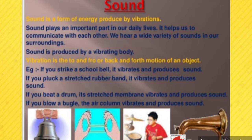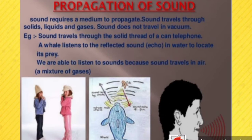Sound requires a medium to propagate. Sound travels through solids, liquids, and gases, but does not travel in a vacuum. For example, sound travels through the solid thread of a telephone; a whale listens to reflected sound in water to locate its prey; and we are able to hear sounds because sound travels through air. This means sound needs a medium to travel.